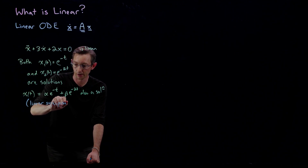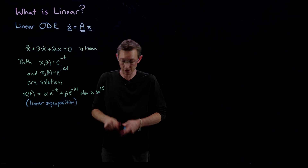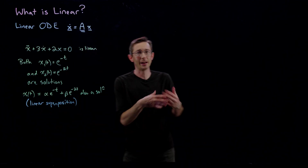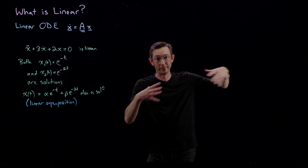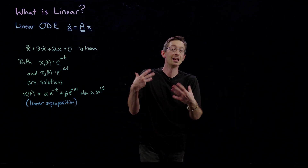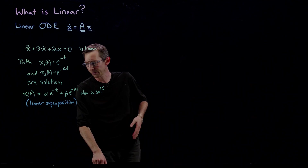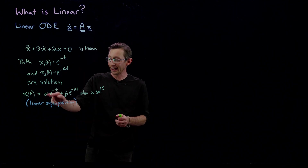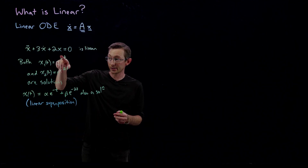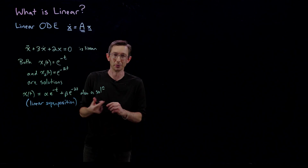Linear superposition shows up in many places — for example, you can add up different sine waves to build some function, which is exactly what the Fourier transform does, again relying on linear superposition. Let me confirm that any linear combination of these two solutions is also a solution.